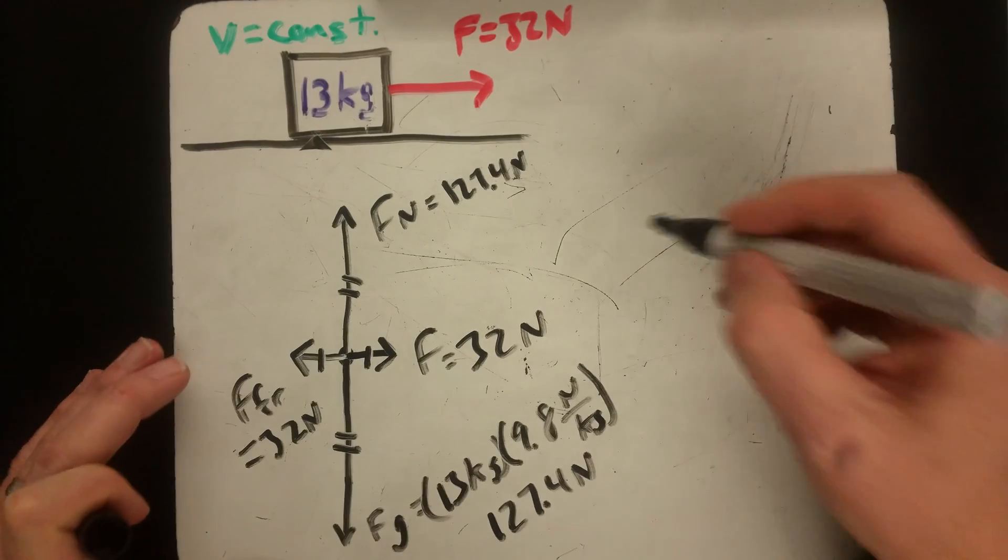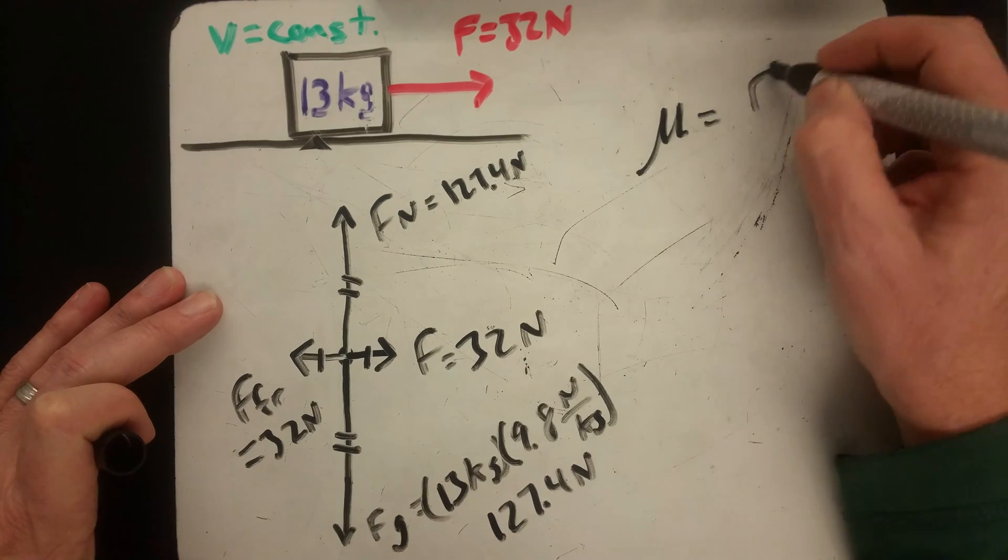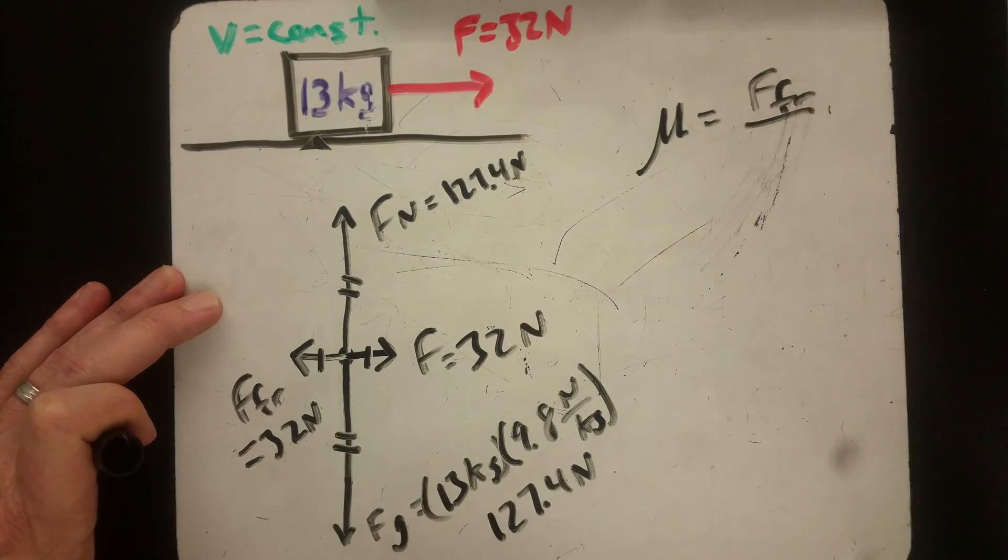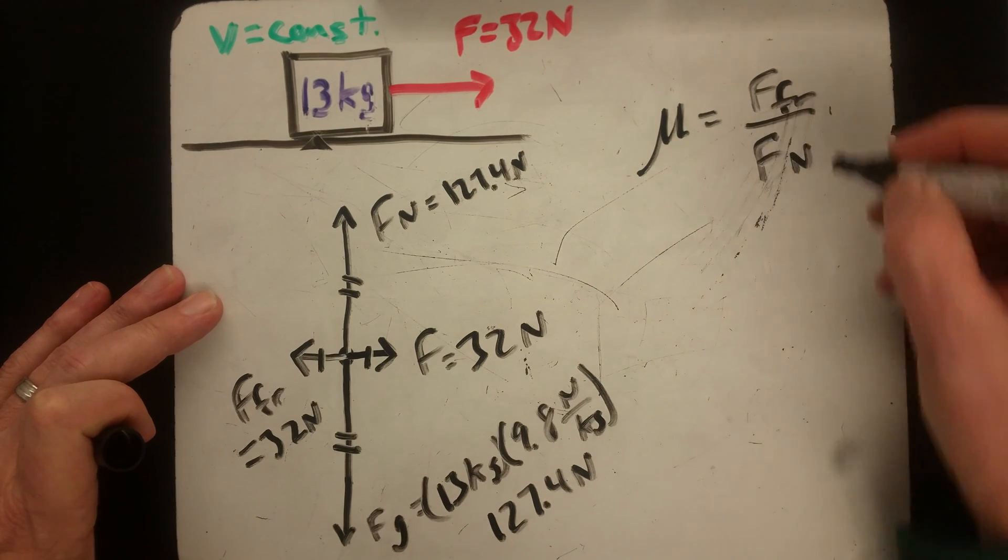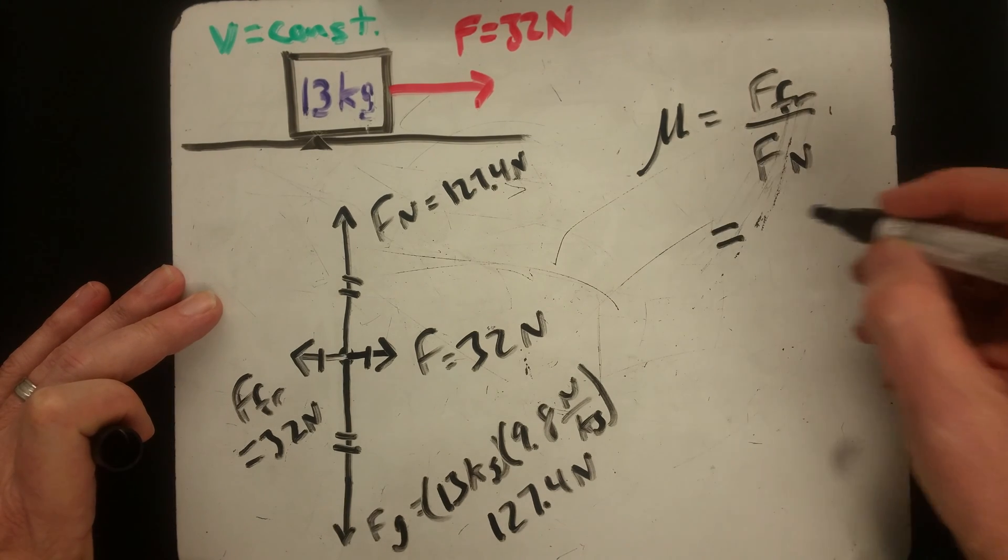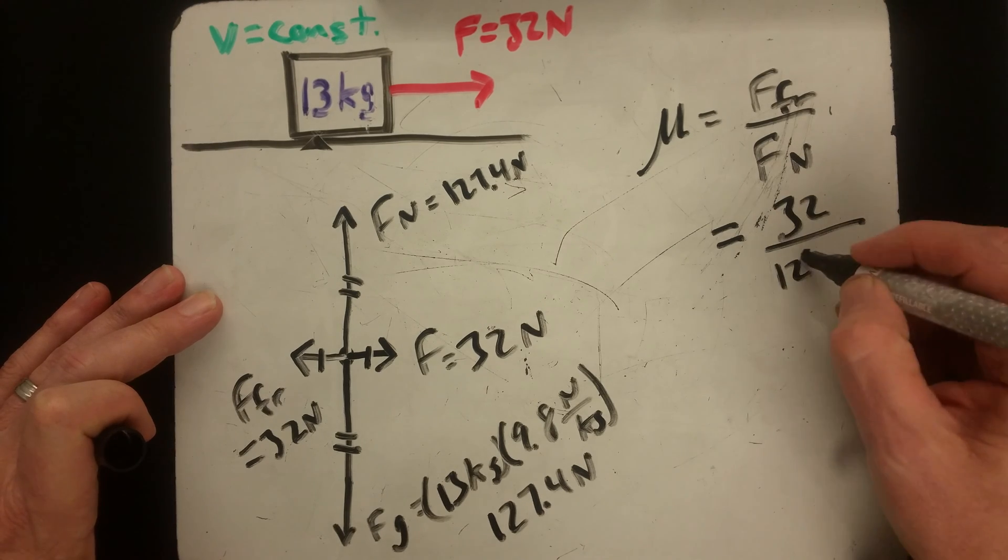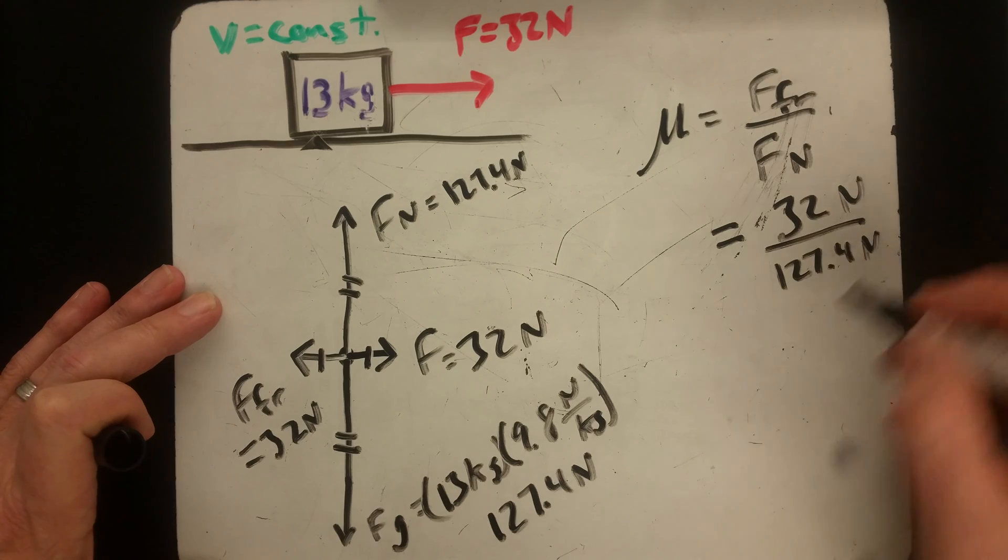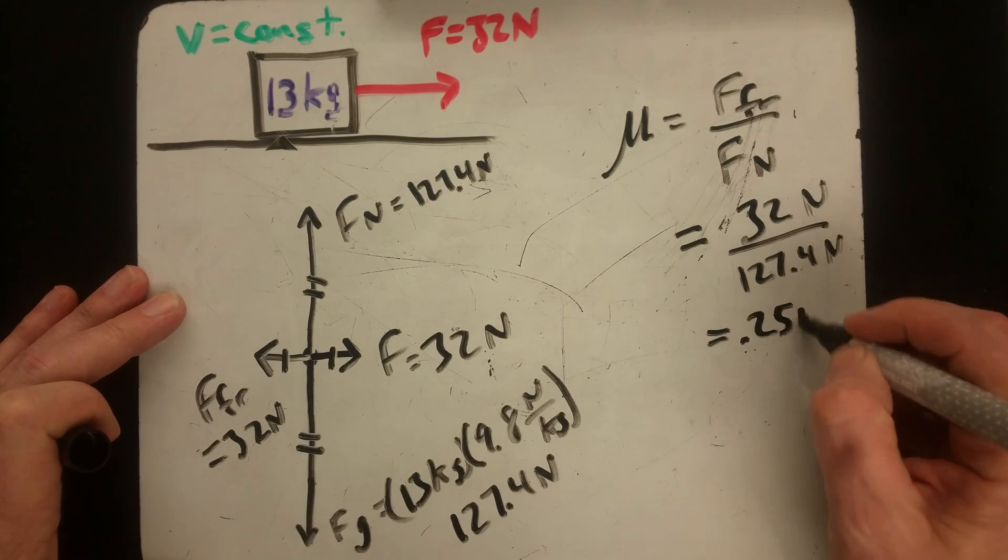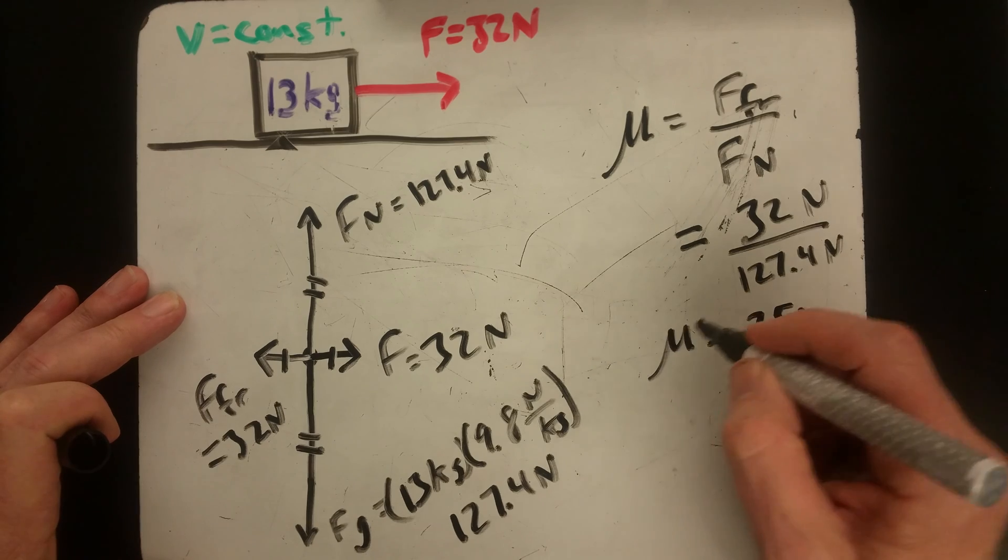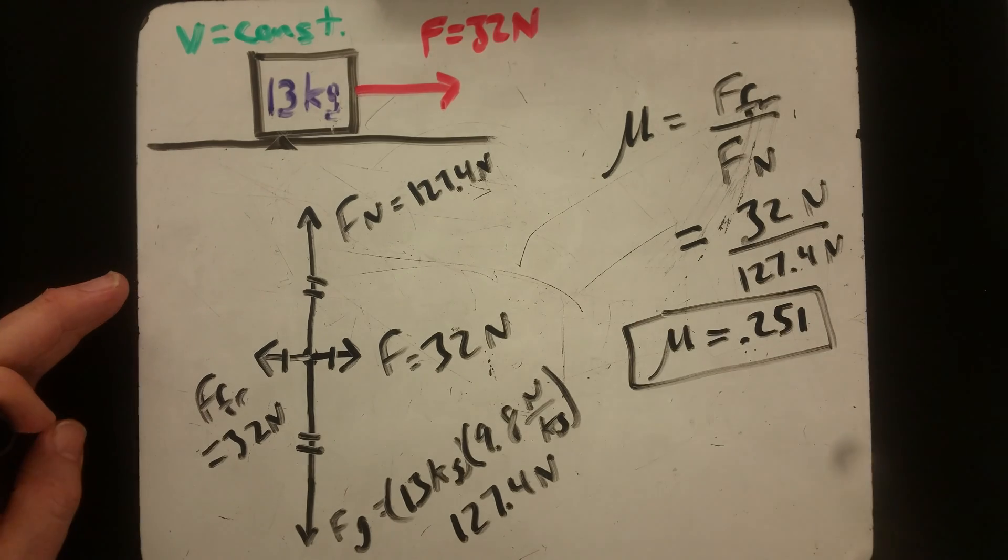The problem asks us for what is the friction coefficient, which is the force of friction over the force normal. Plug in our numbers: 32 over 127.4 newtons, and that gives us 0.251 as our friction coefficient, no units necessary.